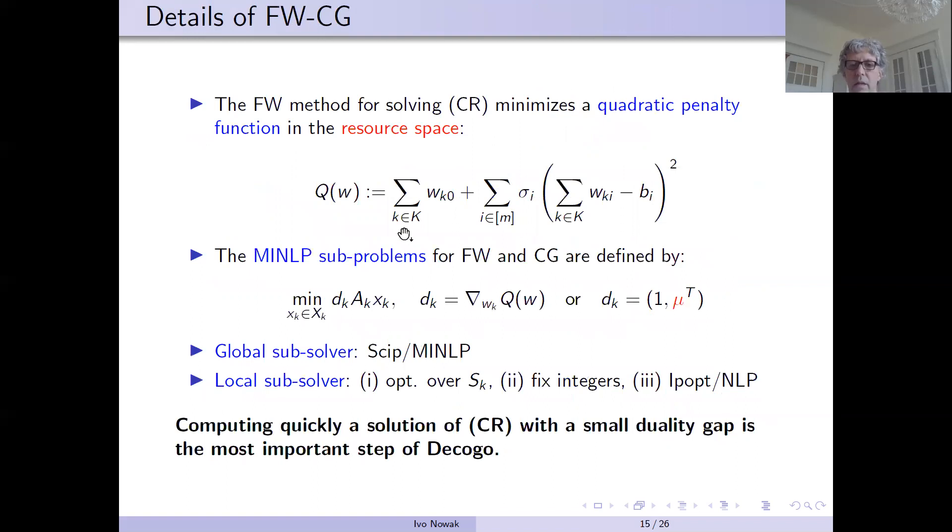Here's a detail of the Frank-Wolfe method. So we are using a quadratic penalty function. Here's the sub-problems which we are solving. So these are small MINLPs. The direction is either the gradient of the penalty function or it's the reduced cost direction where we are using the dual solution of the master problem.